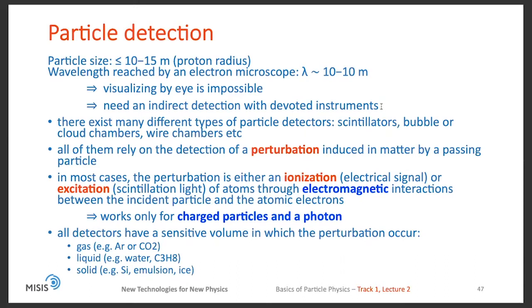There exist many different types of particle detectors, like scintillators, bubble or cloud chambers, wire chambers, etc. But all of them rely on the detection of a perturbation which is induced in matter by a passing particle. In most cases, this perturbation is either an ionization (electrical signal) or excitation (scintillation light) of atoms through electromagnetic interactions between the incident particle and atomic electrons.